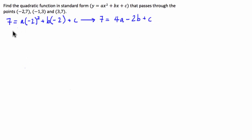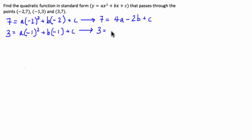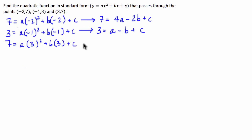Moving on to the next point, (-1, 3): we have 3 = a times (-1)² + b times (-1) + c, which gives us 3 = a - b + c. And for the third coordinate point, we have 7 = a times 3² + b times 3 + c, which gives us 7 = 9a + 3b + c.